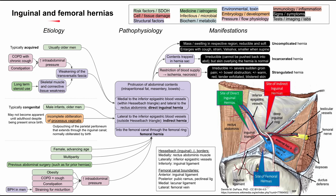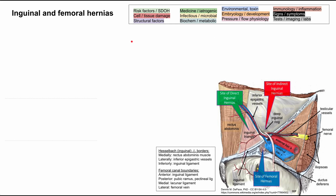This is a quick video on inguinal and femoral hernias. I'll be discussing the etiology, the pathophysiology, and the manifestations for these types of hernias. The color coding for each of the boxes is listed up here in the top right, and I'll be clearing each of the boxes and repopulating the flowchart one by one as we talk about each concept. In addition, in this video, I'm going to leave up this anatomic reference for the sites of these hernias.